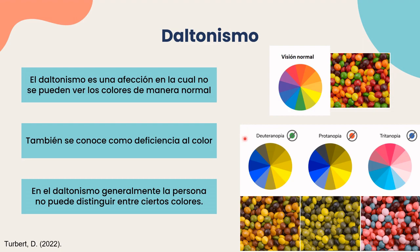Existen distintos tipos de daltonismo. Por ejemplo, la deuteranopía, que va a ser una afectación para ver los colores verdes, y aquí se puede observar más o menos cómo ven los colores esas personas. La protanopía, que es de lo que les voy a hablar, y aquí pueden observar cómo verían los colores esas personas. Y la tritanopía, donde también se muestra cómo se observan esos colores.